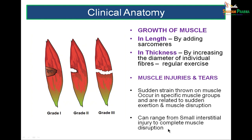Muscle injuries and tears: grade 1 is just a contusion and will heal on its own. Grade 2 is a partial thickness tear. Grade 3 is very severe — the entire muscle belly is disrupted. Remember, muscle bellies are not as strong as tendons, so when strain is thrown on a muscle, it is more probable that the muscle belly will tear rather than the tendon.